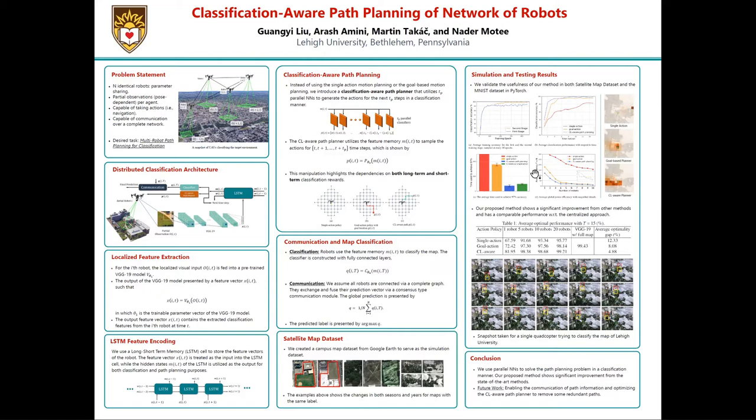At each time step, the encoded history feature vectors M_iT will be served for two different purposes. First, they will be passed to a classification-aware path planner to generate the path for the next few time steps. At the same time, they will be passed to the classifier to generate the beliefs of the environment.